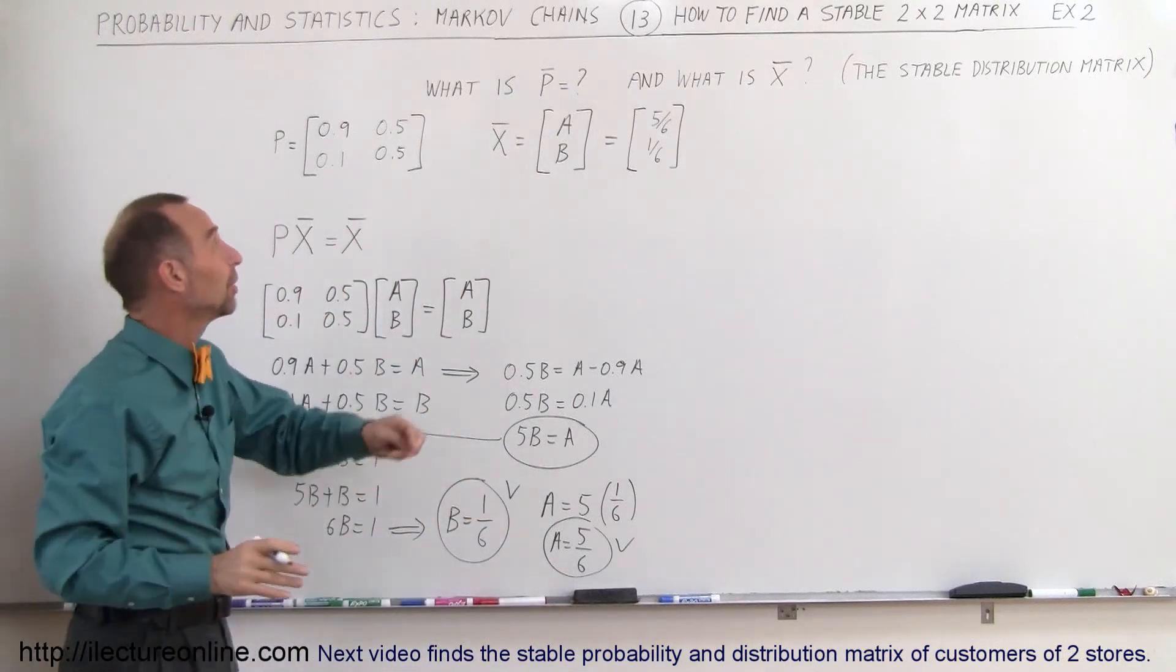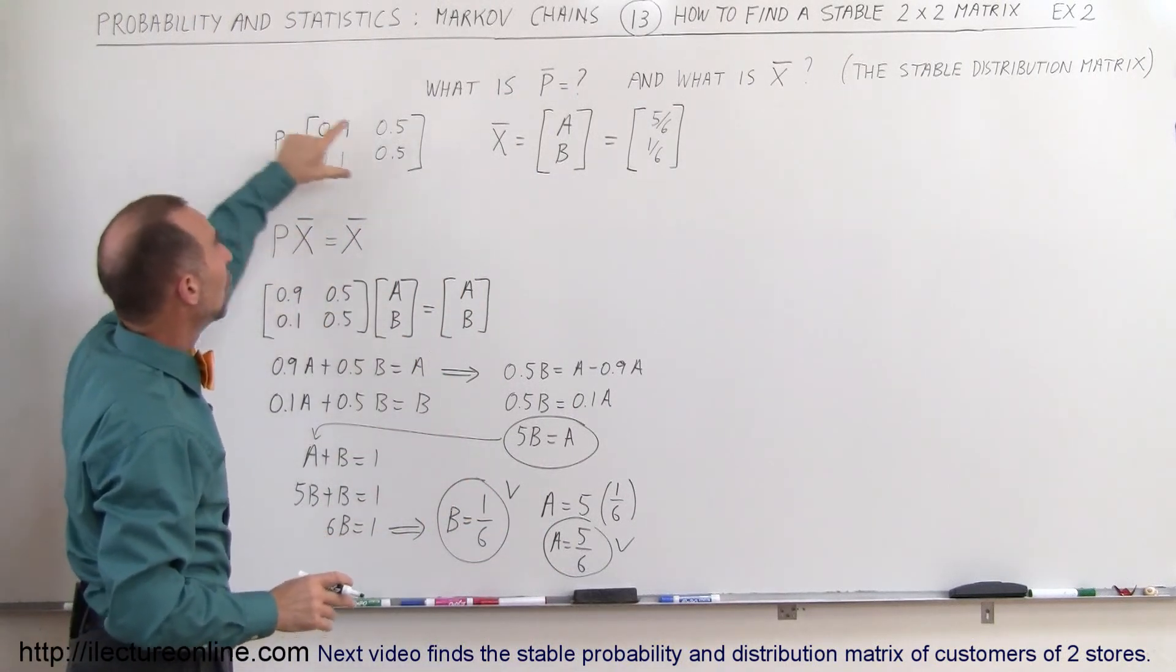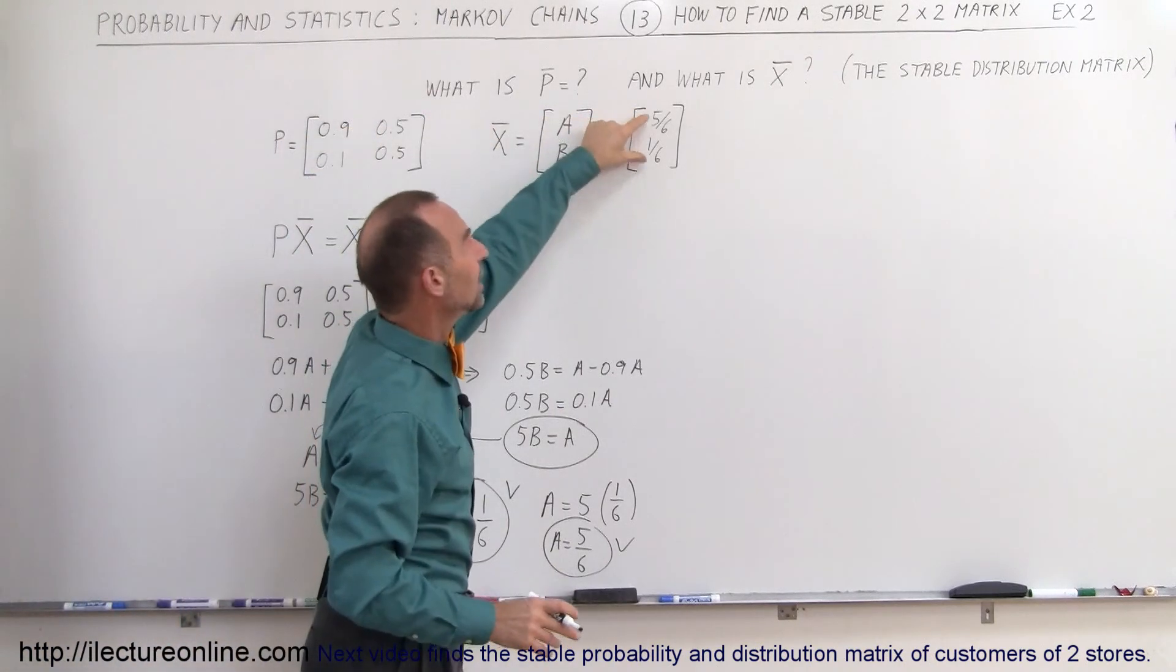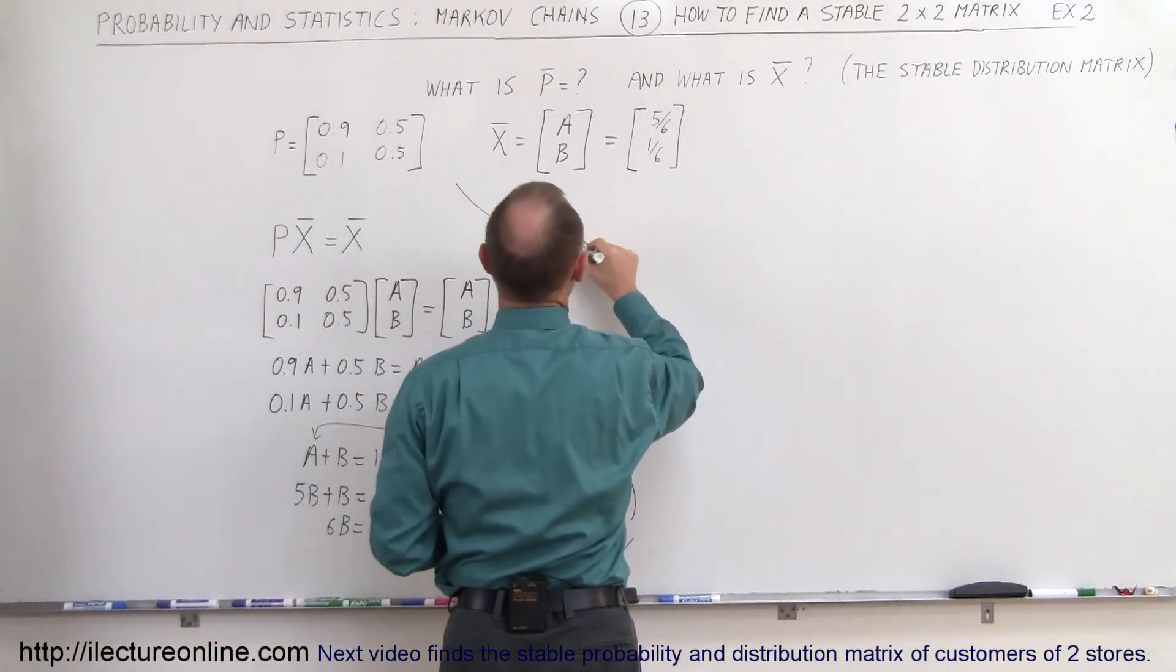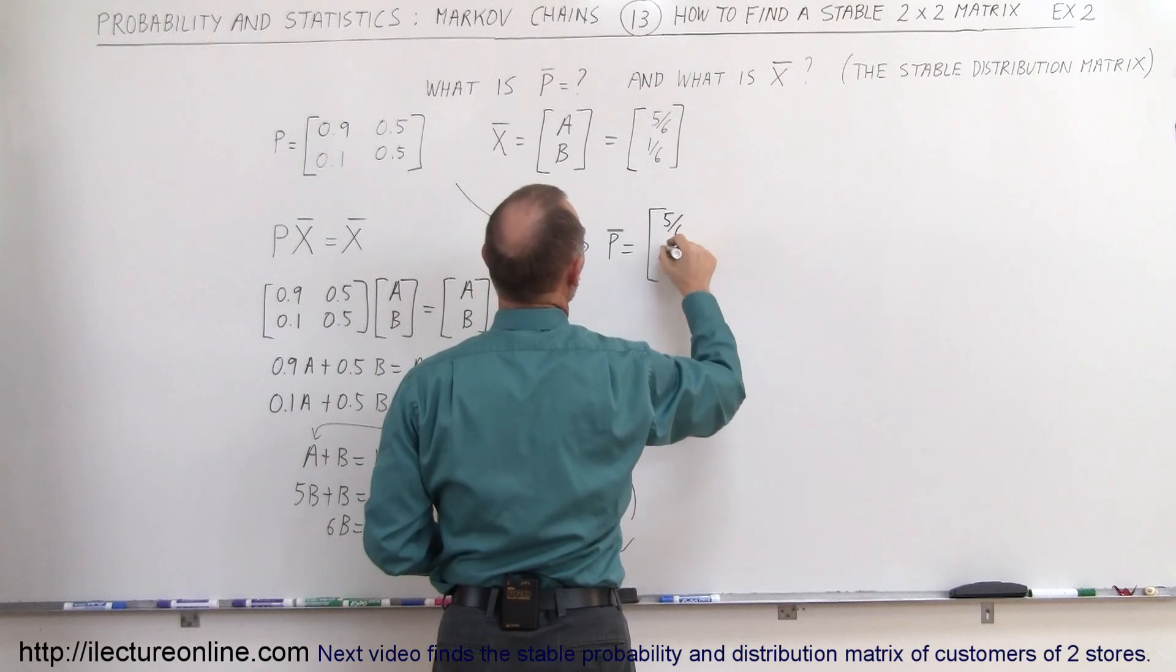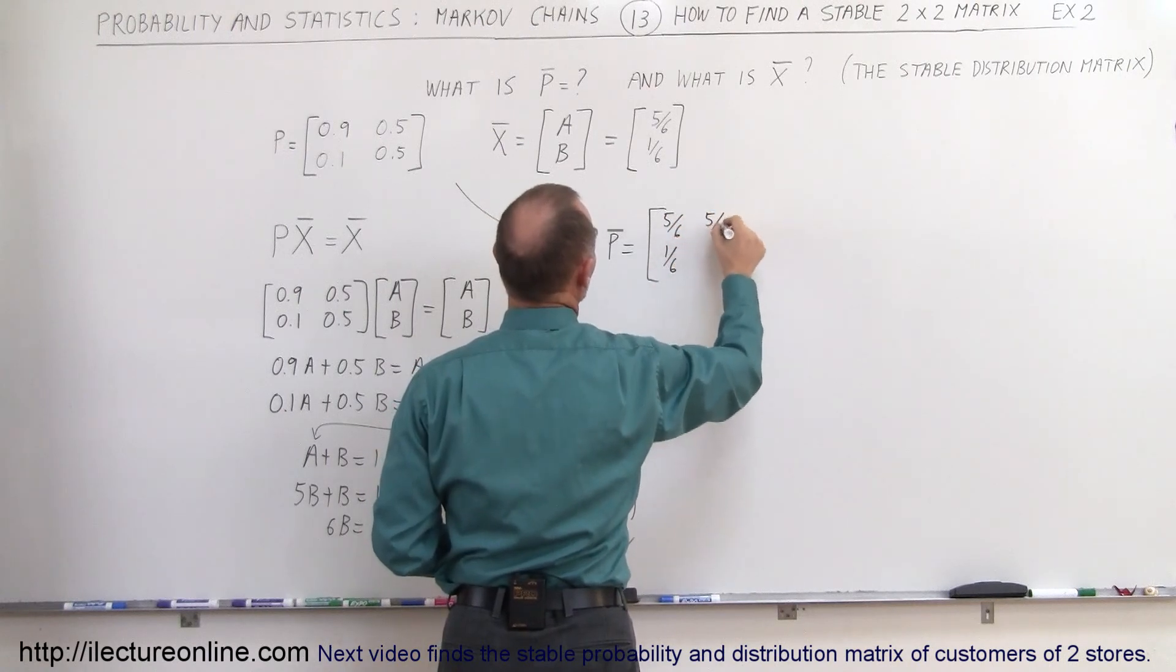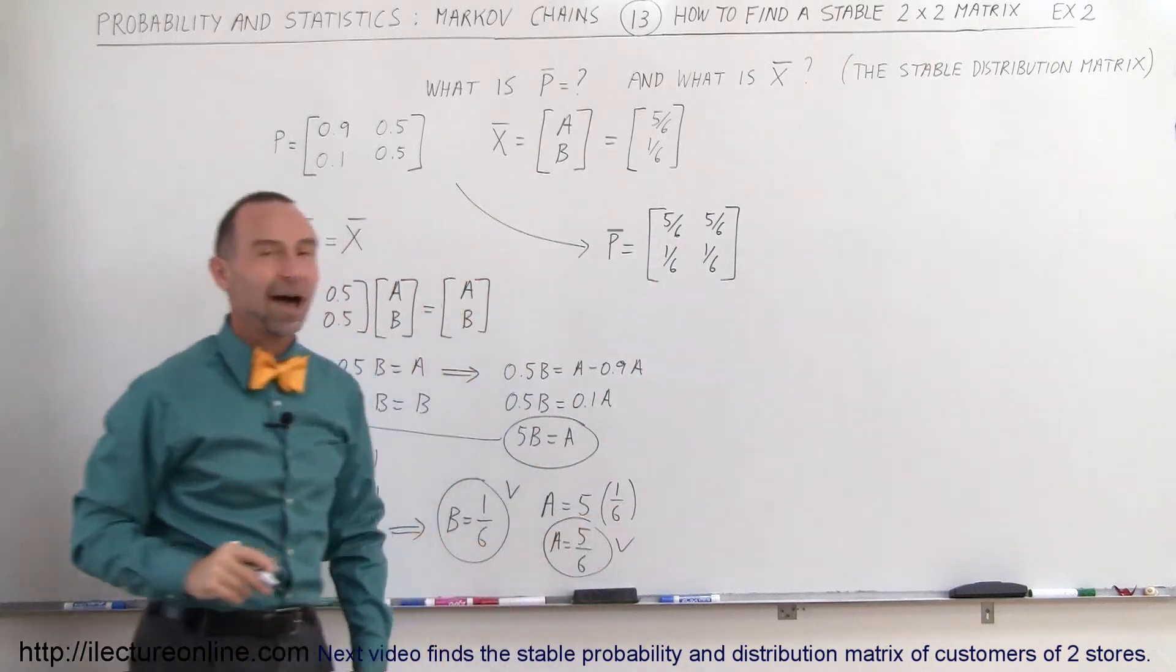Now once we have that, we can very easily come up with the stable matrix, because the stable matrix is simply P with these elements replaced by the final states of A and B. So the stable distribution matrix P is therefore going to be equal to 5 sixths, 1 sixths, 5 sixths, and 1 sixths. And that's how we do that.